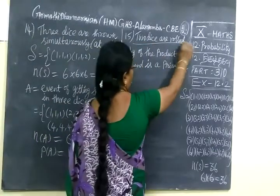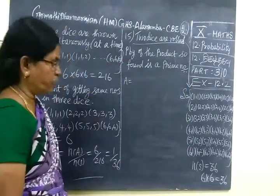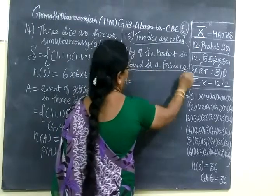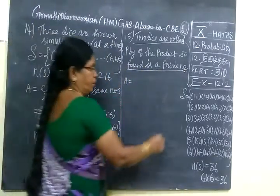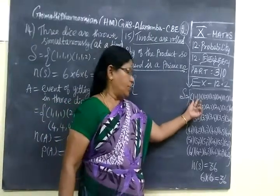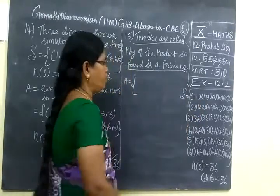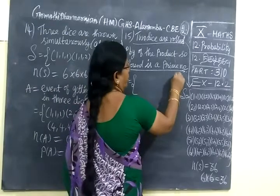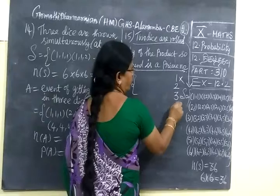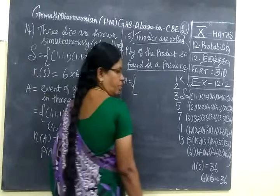Next we are given 2 dice. Two dice, the result is n(S)=36. We want to find the probability that the product found is a prime number. Product means multiply. If you multiply the numbers, it should be a prime number. Prime numbers: 1 is not a prime number. Then 2, then 3, 5, 7, 11, 13 and so on.